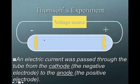This is kind of what Thomson had. He had a cathode ray tube, which he was passing a current through. These lines represent a current. This is your voltage source. Your current is flowing. As the electric current was passed through the tube, from the cathode, the negative electrode, to the anode, the positive electrode, he noticed something.